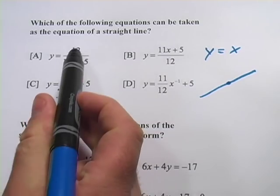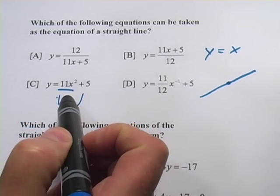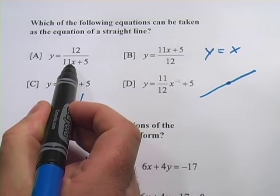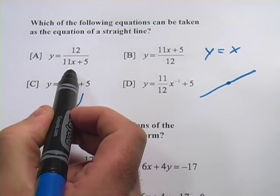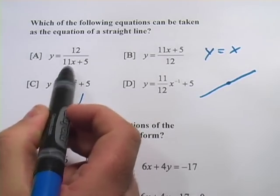So let's look at these one by one. We've got y equals 12 over 11x plus 5. And if you see the x down in the bottom of a fraction, what that really means is that the power is a negative 1. So in this case, the power is not 1, it's negative 1, so that is not going to be a line.